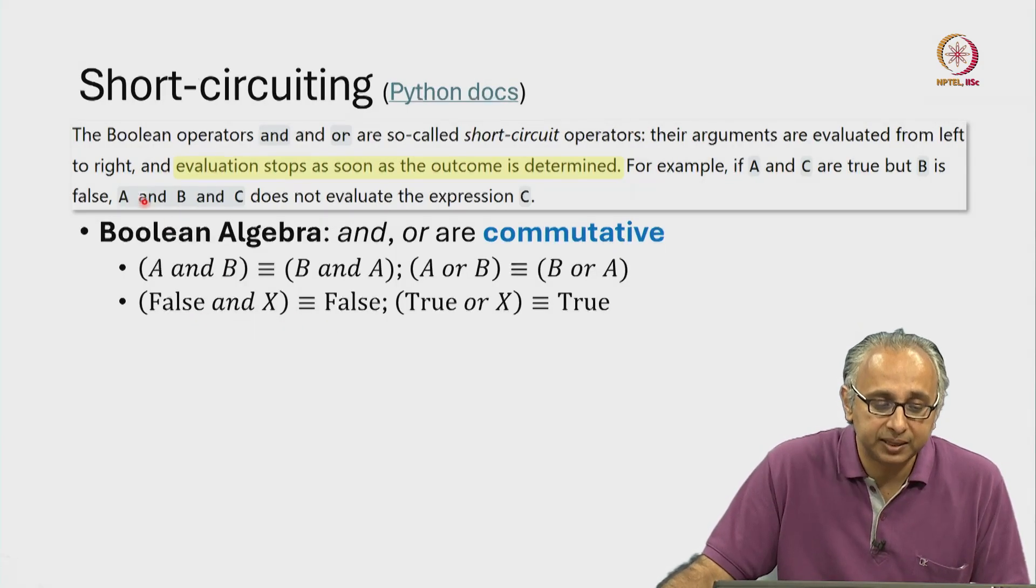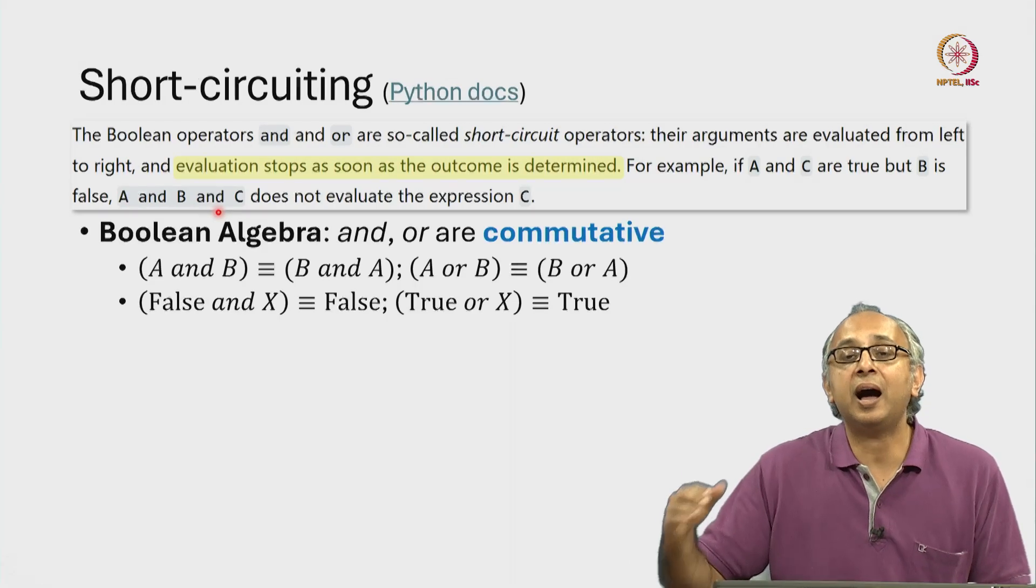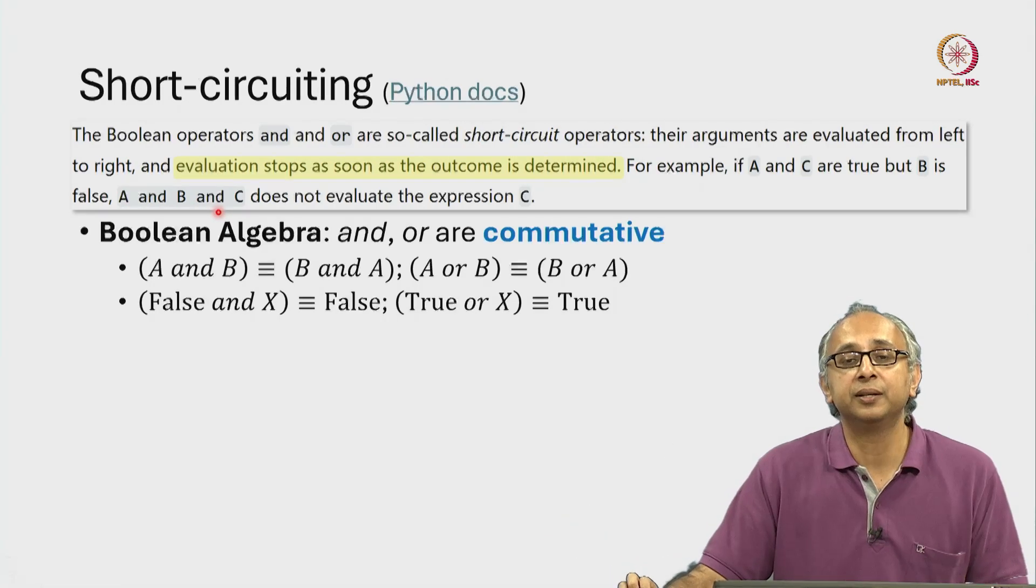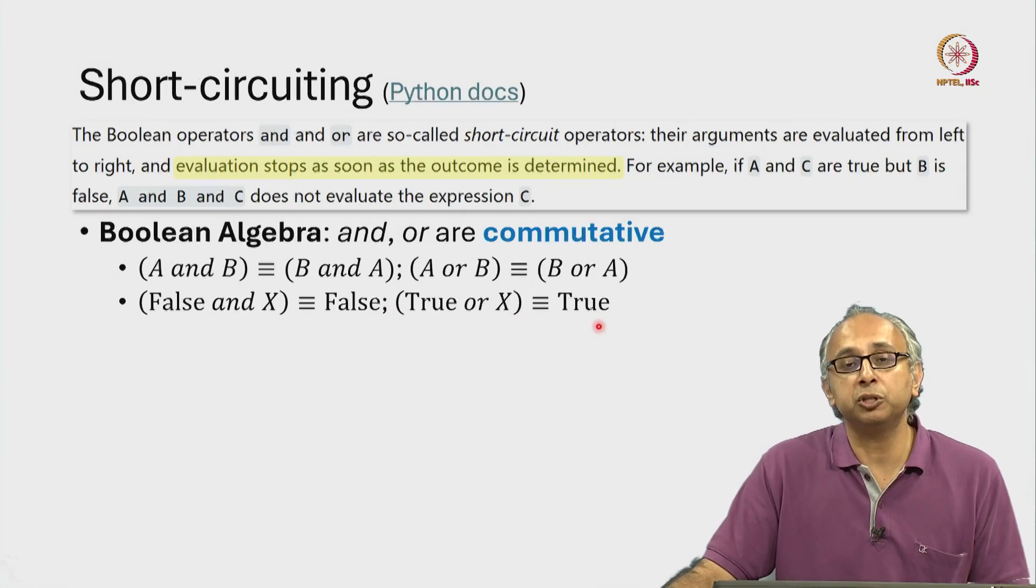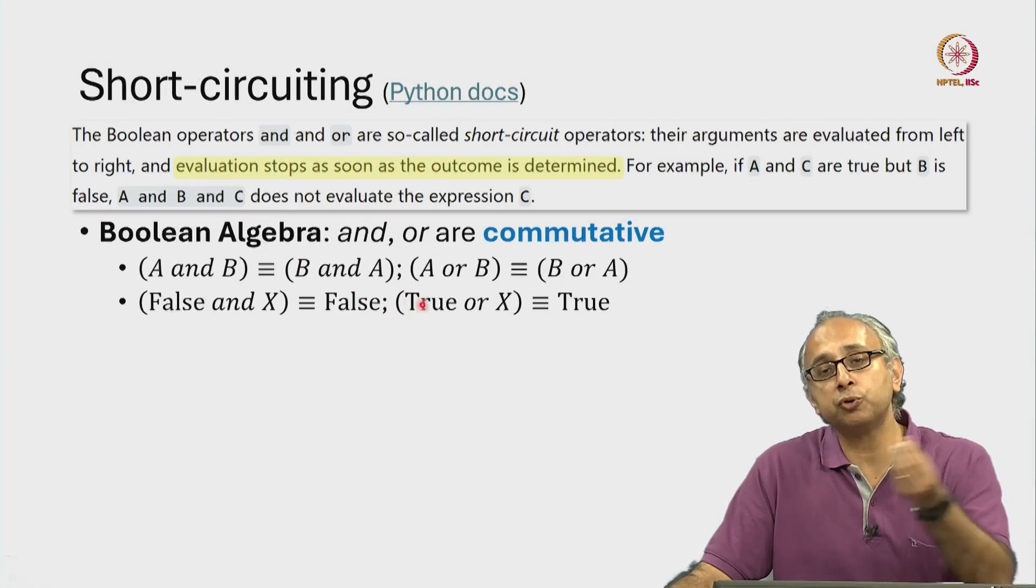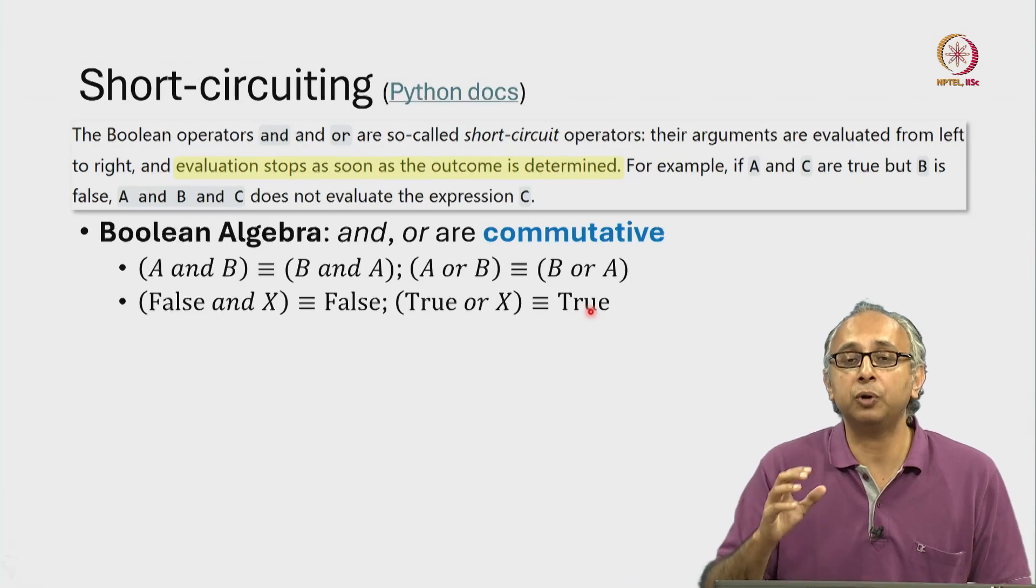This is what is allowing me, as soon as I see a false in the middle of some ANDs, I don't need to evaluate the rest. Similarly, true OR anything is going to be true. So if I happen to see a true in the middle of a sequence of ORs, as soon as I hit the true, I don't have to evaluate other things.